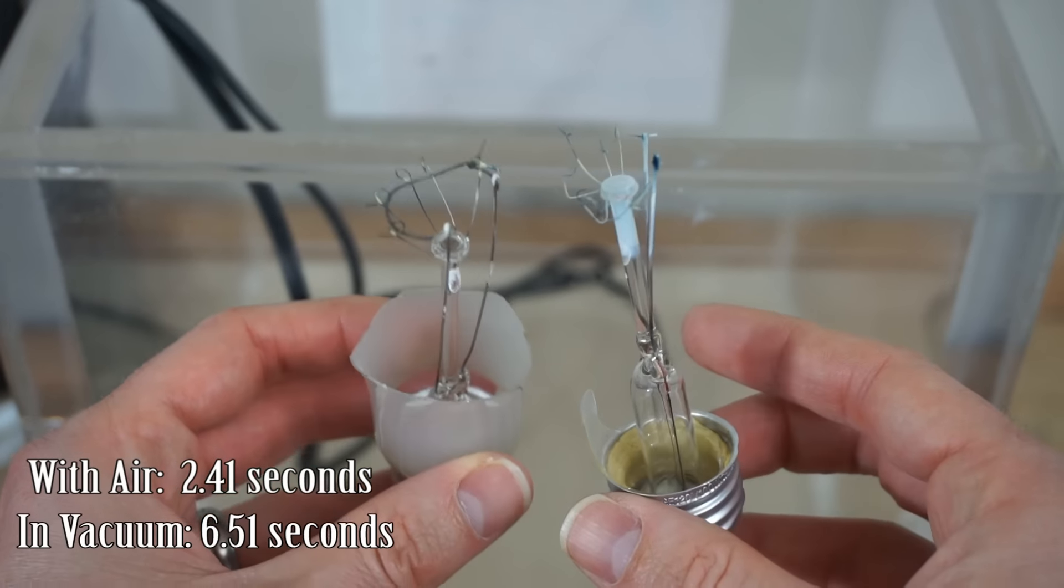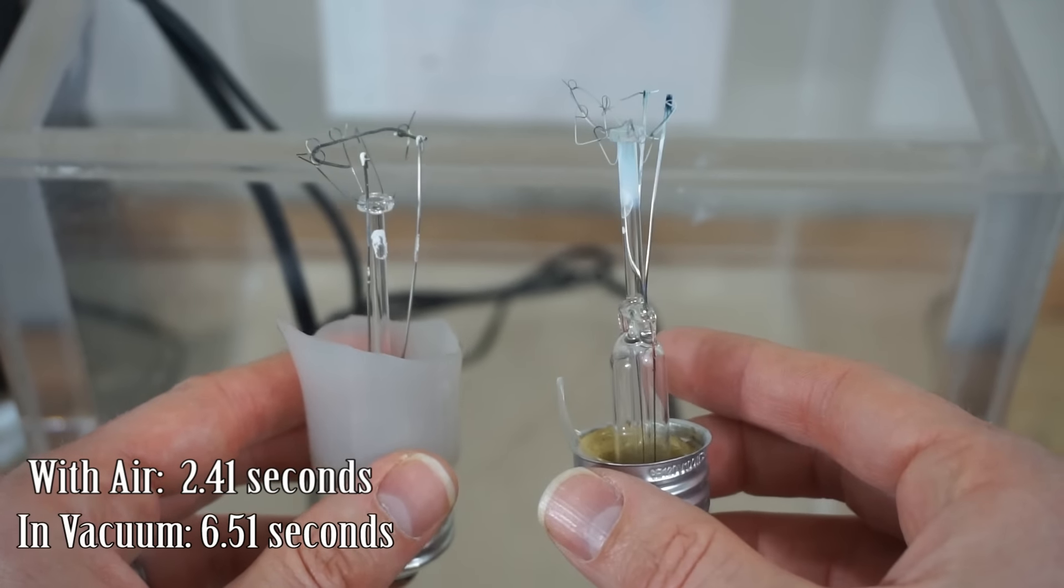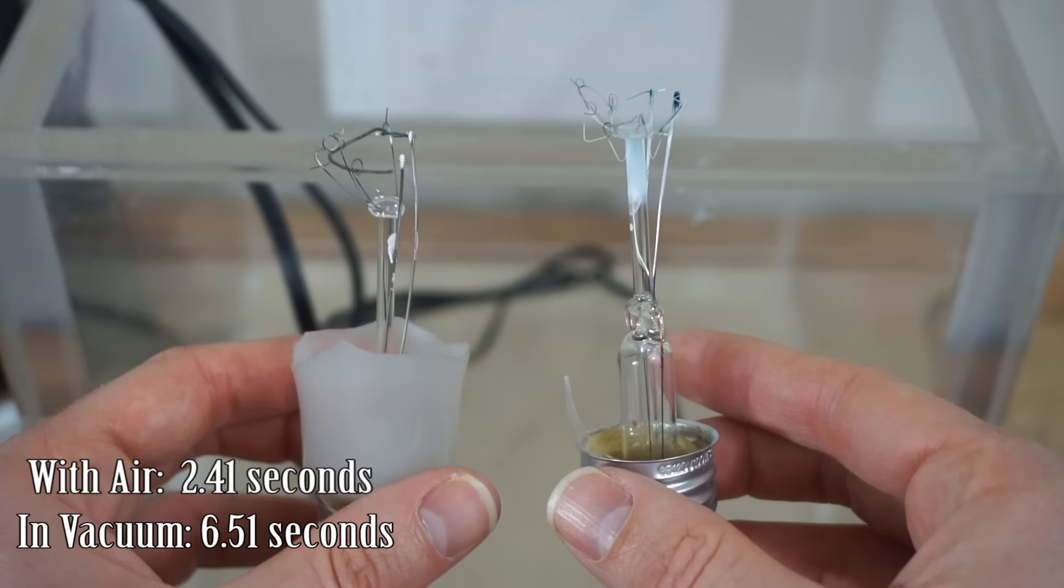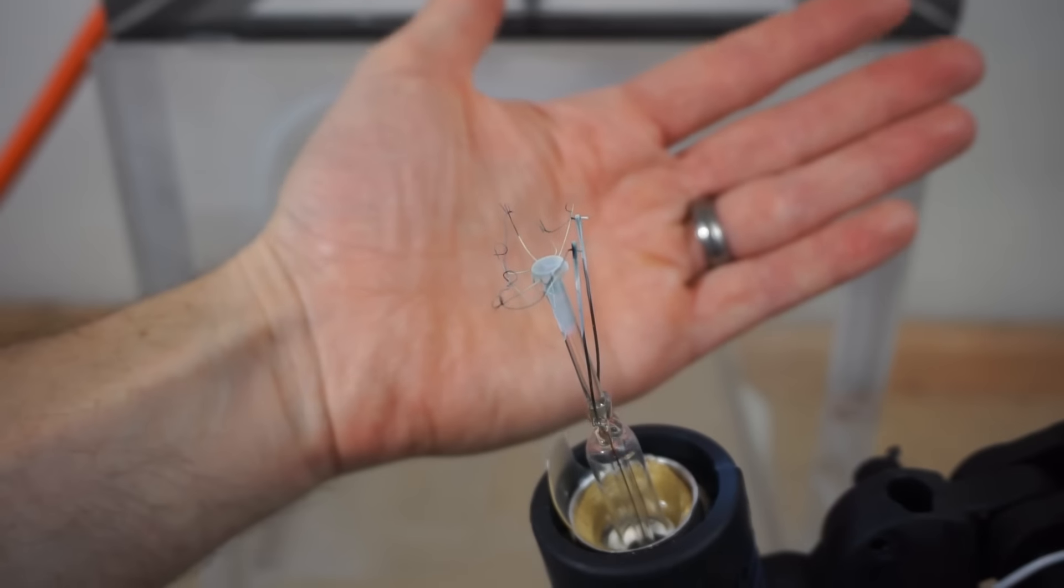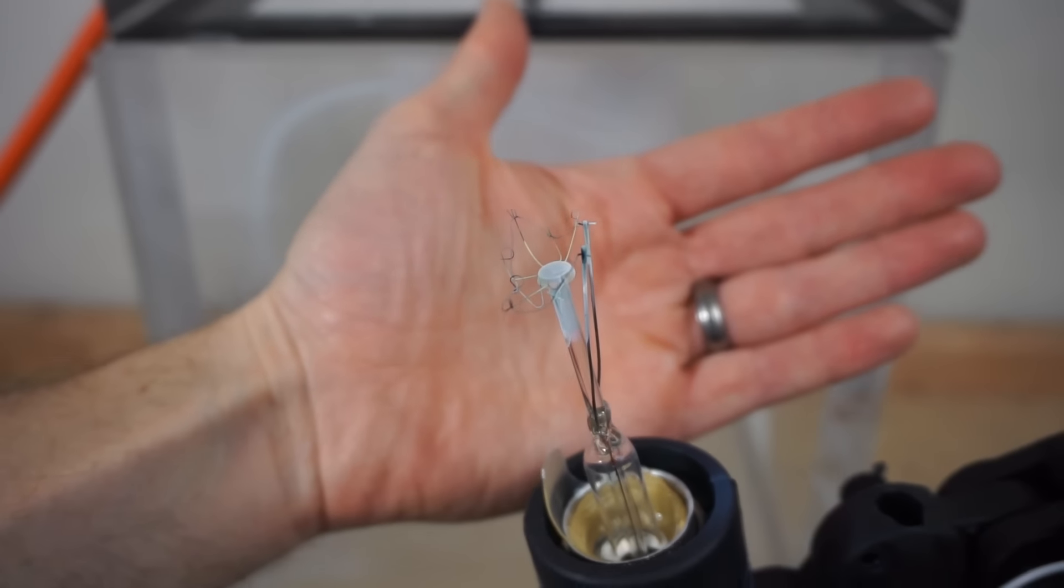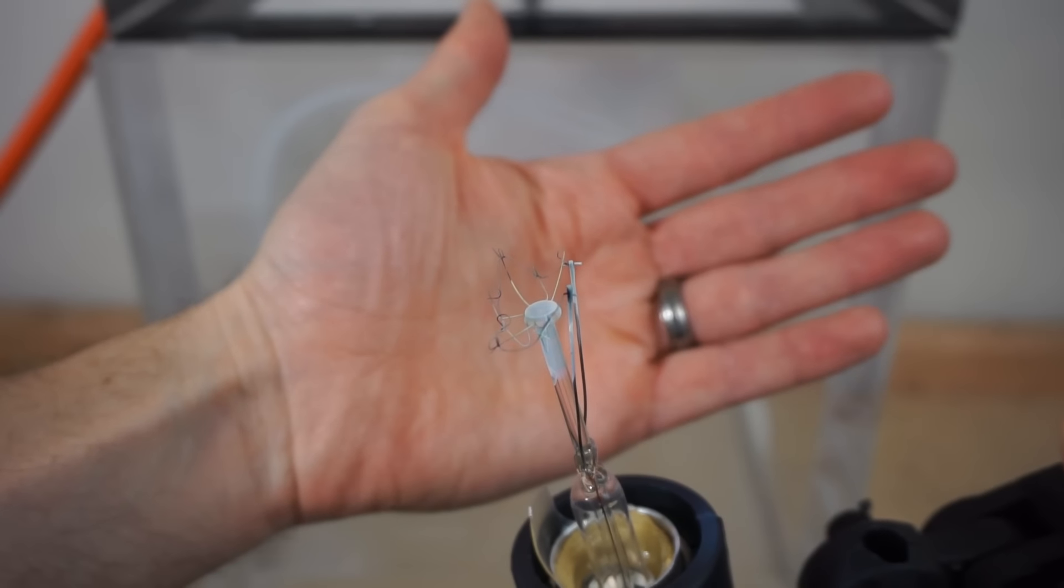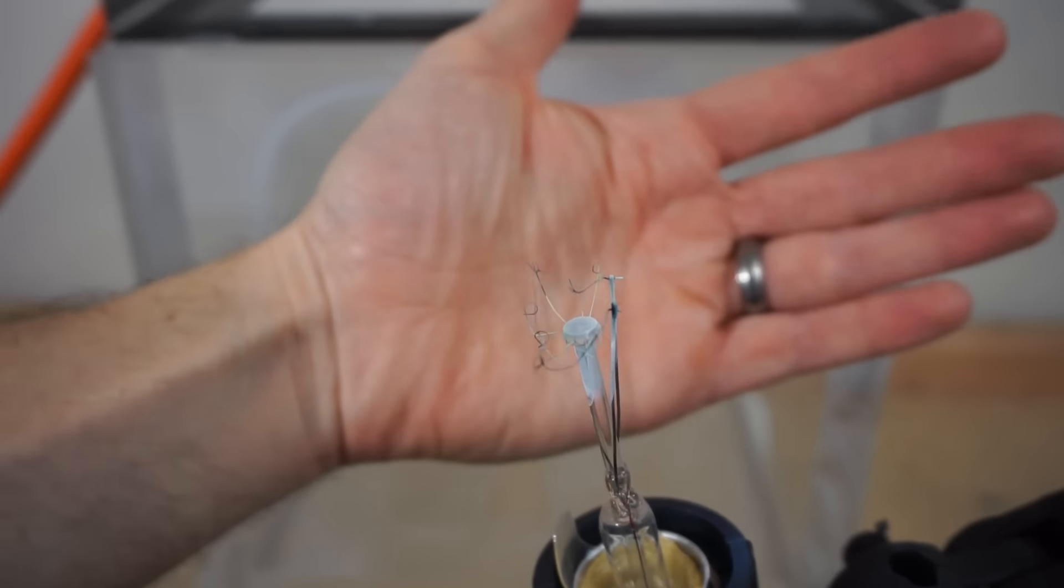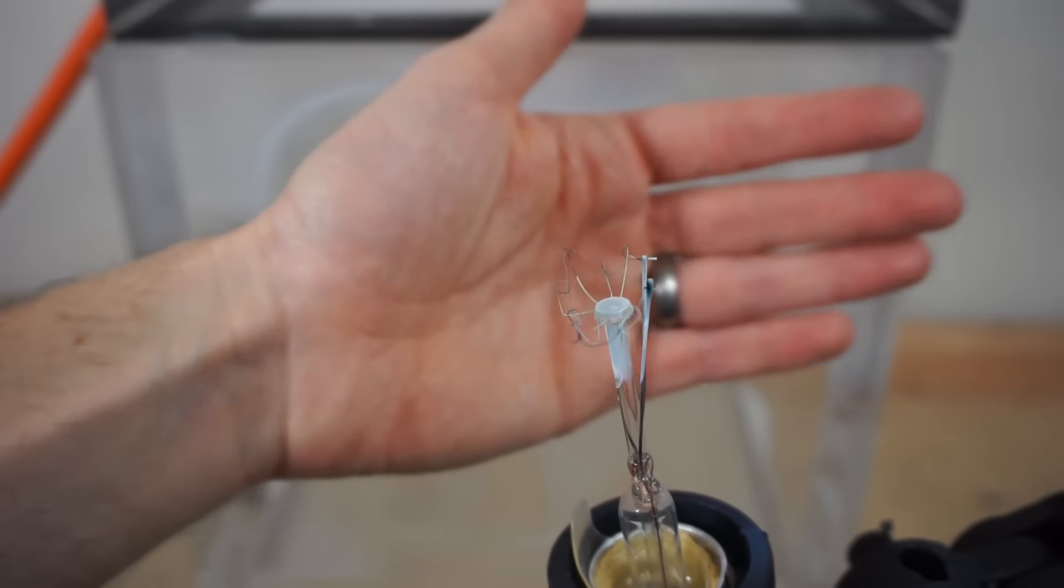Either way, the one in the vacuum did burn out pretty quickly. It lasted longer, but not as long as I thought it would. It's actually pretty impressive. This is a pretty low vacuum in here, so it's impressive that light bulbs stay lit as long as they do. That shows you how well engineered they are to not have any excess oxygen in there so that the filament can't oxidize.